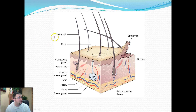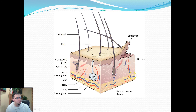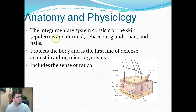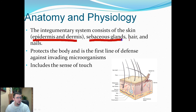Here is a diagram that I'm going to reference quite a bit during this video. You can see that you have hair, some glands, and different layers, all of which will be discussed. The integumentary system consists of the skin, which has two layers — the dermis and the epidermis — as well as some glands, hair, and nails.